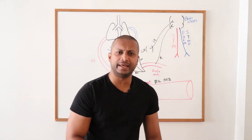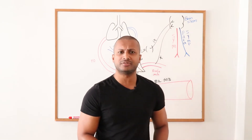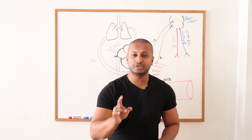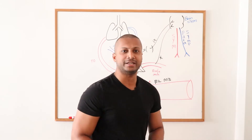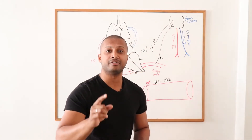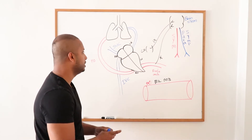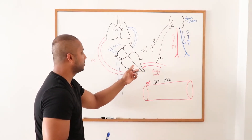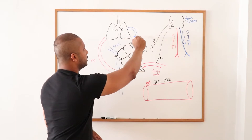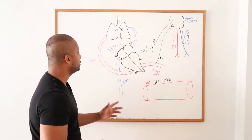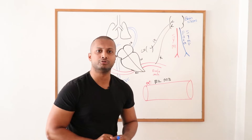Let's determine which type of shock actually benefits from pressors, because not all of them do. Most require correcting the primary problem. To understand this, consider the diagram: the heart, lungs, left ventricle pumping blood through the aortic arch, right ventricle pumping through the pulmonary arteries, pulmonary veins returning to the left side, and venous return via the superior and inferior vena cava.